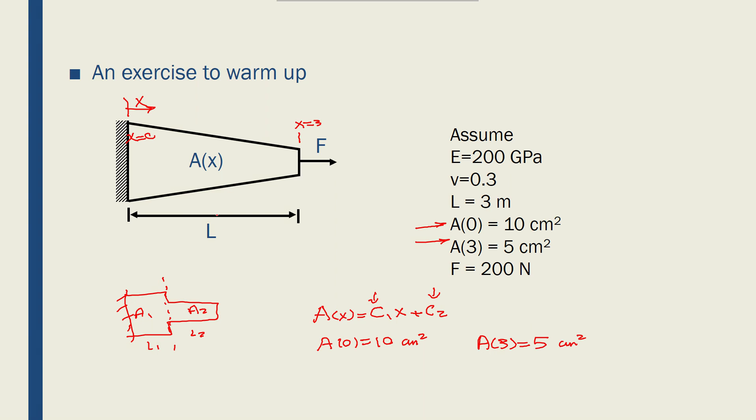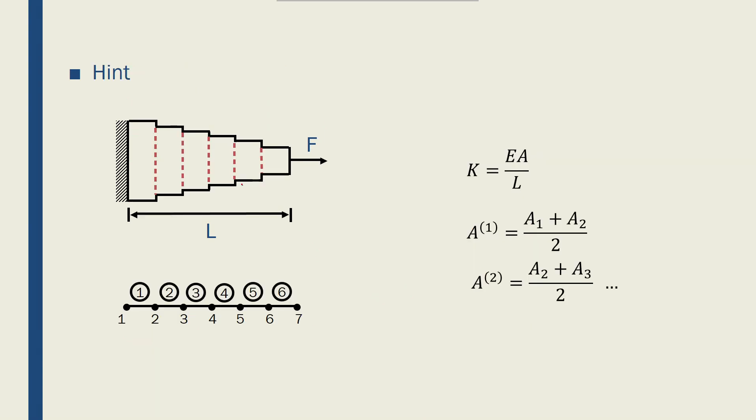So having known that I can find the cross section at each location across this bar. Be here or here I can find the cross section. All I have to do is to put the X there or here. Which is important and very helpful because now I can discretize this bar into as many elements as I want like here. I have 6 elements and 7 nodes. And each of these would be at L over 6 length.